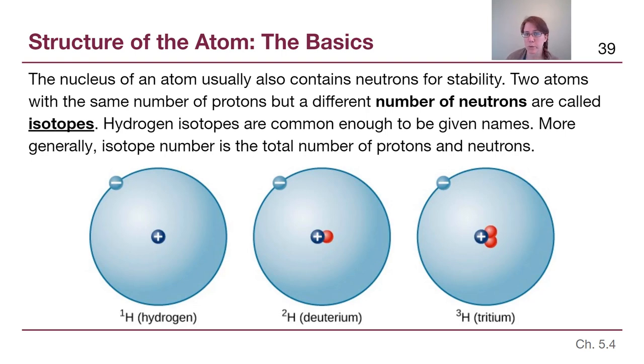Now hydrogen isotopes are common enough in the universe to be given names separate from just hydrogen one, hydrogen two, and hydrogen three. They're shown here on the bottom of the slide, and we won't really get into them in great detail. But when we say hydrogen, in general, we are talking about the most common form, the most common version or most common isotope of hydrogen, which is a single proton by itself.